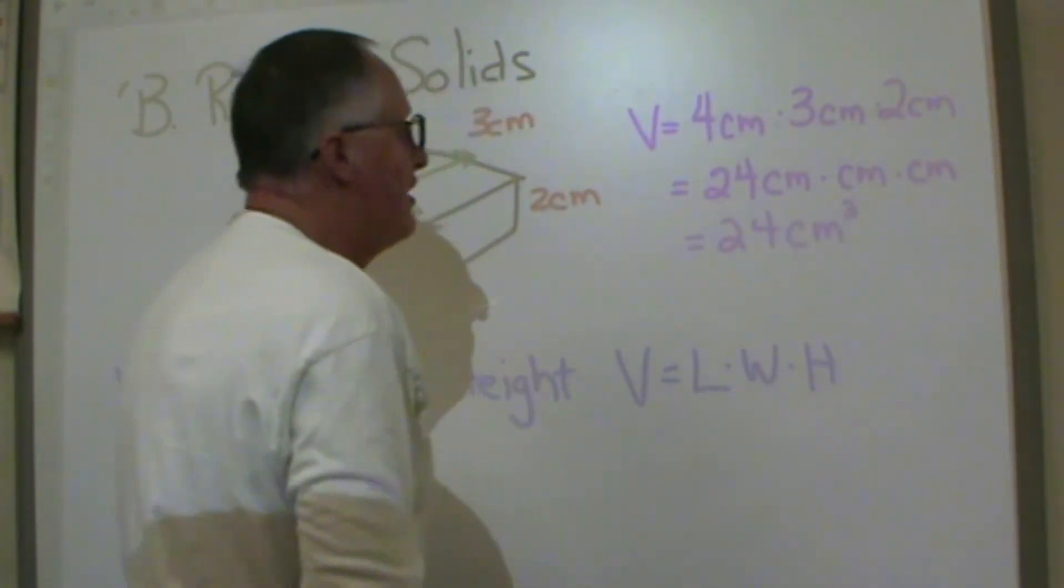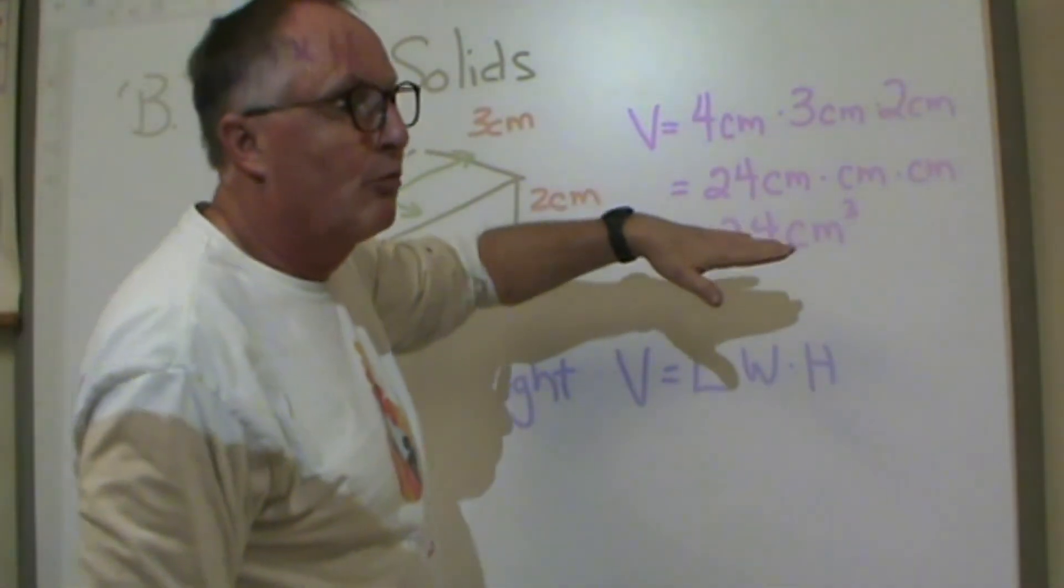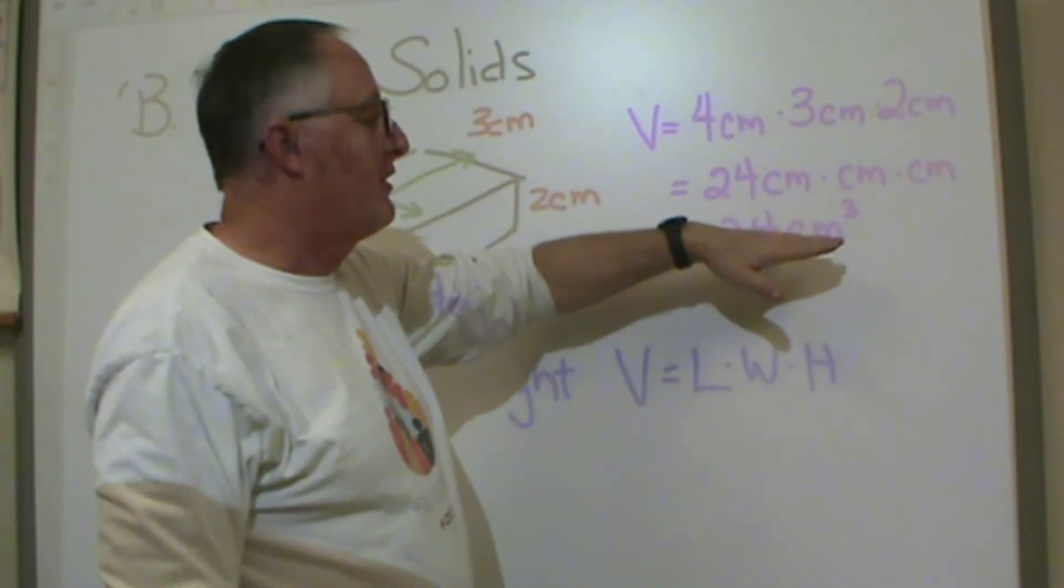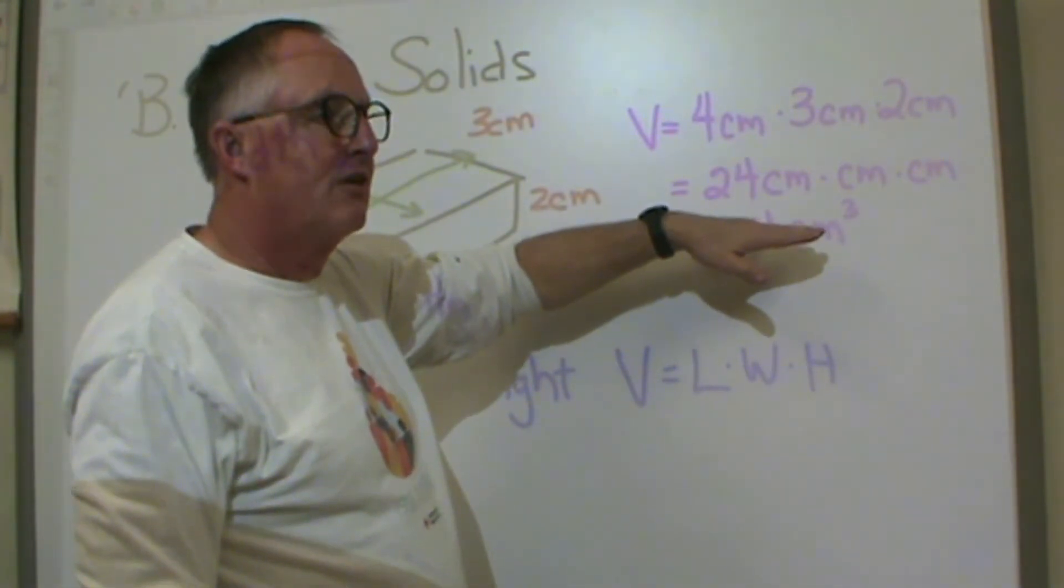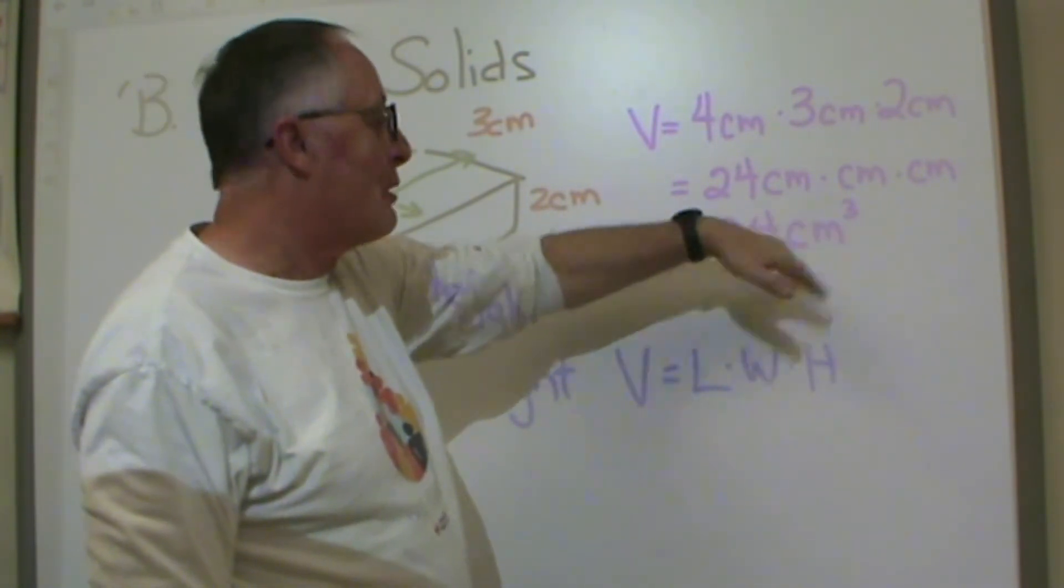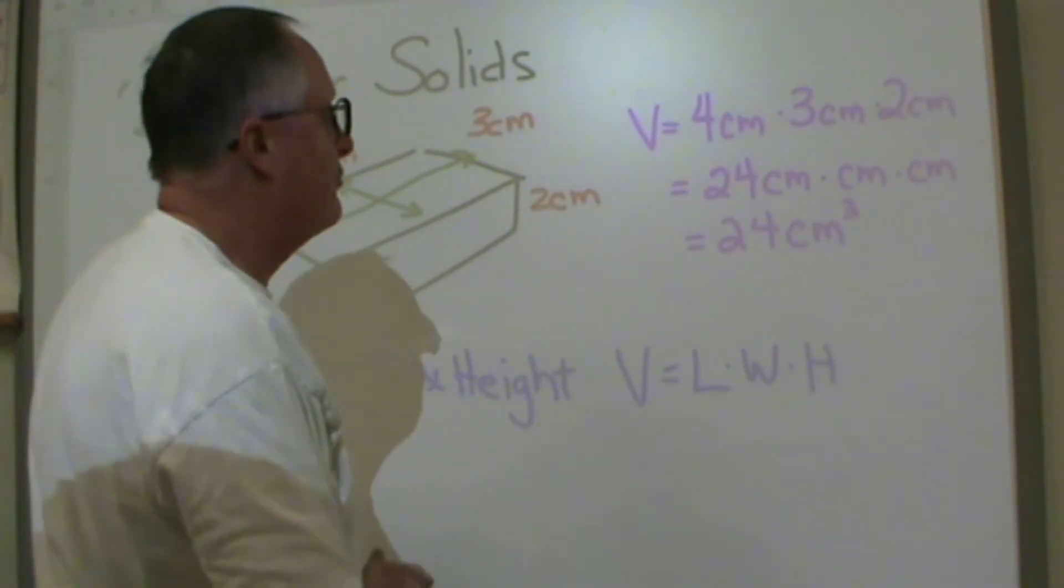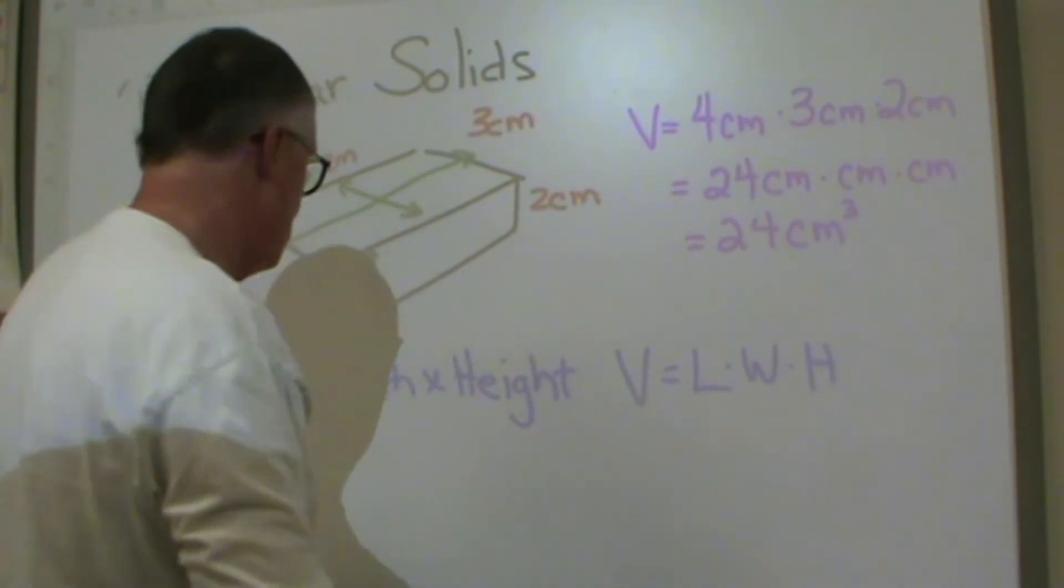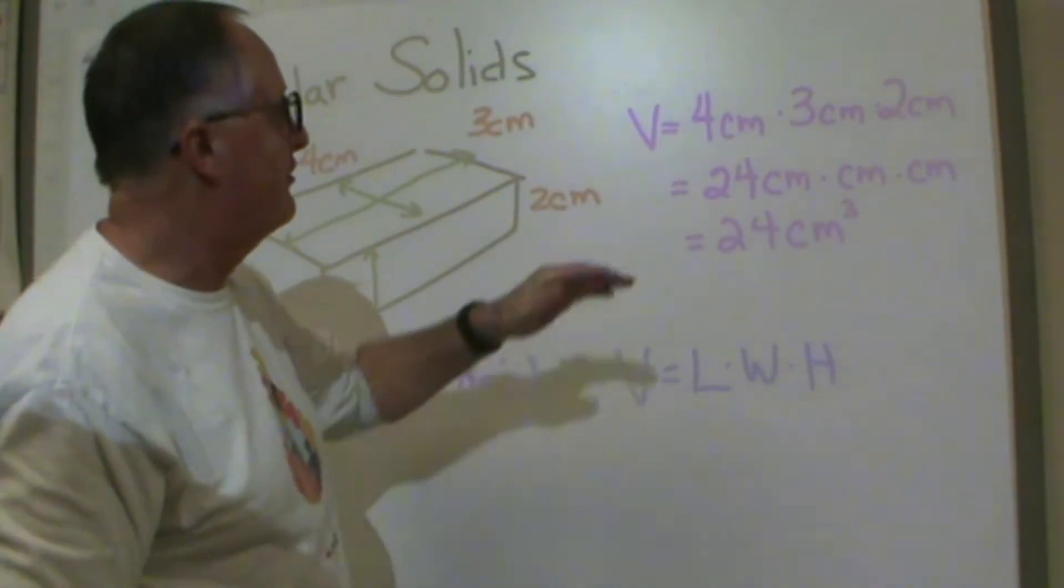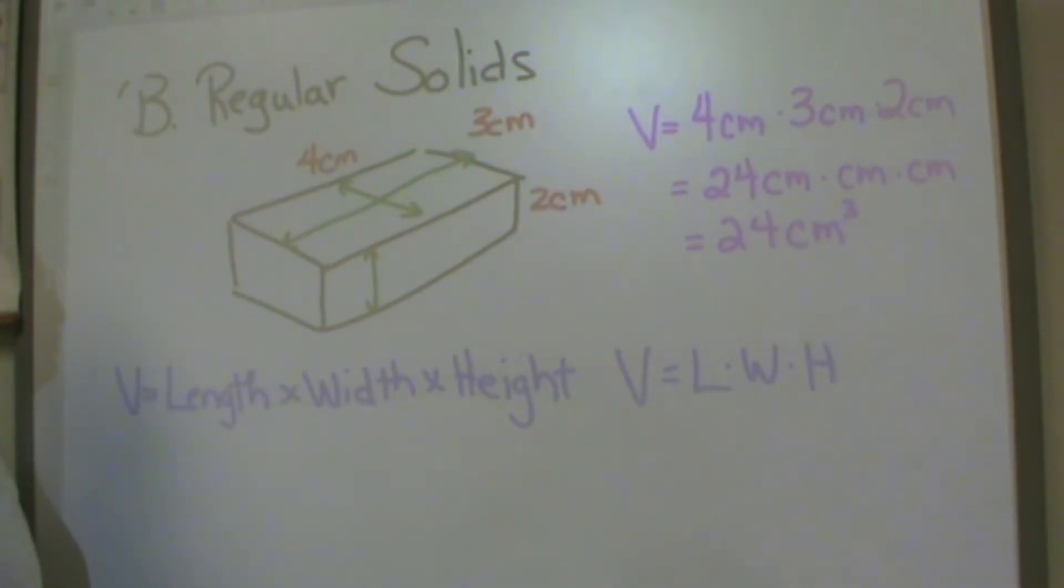So we just say 24 centimeters cubed. Now students a lot of time because you've done more with area in math and that would be centimeters squared, but so students want to put squared on there but volume is always going to be a cubed in there. So we measured liquids in milliliters, the solids, the regular solids are going to be in centimeters cubed.